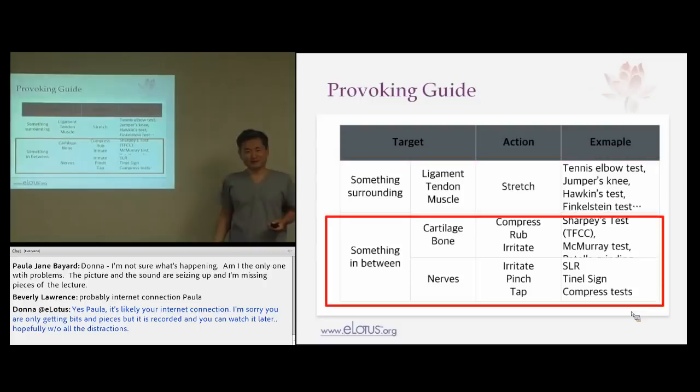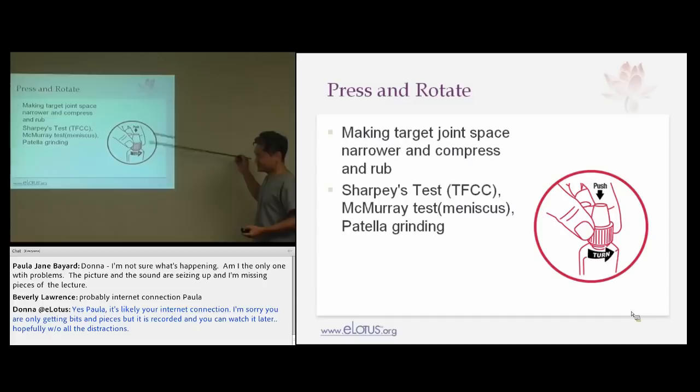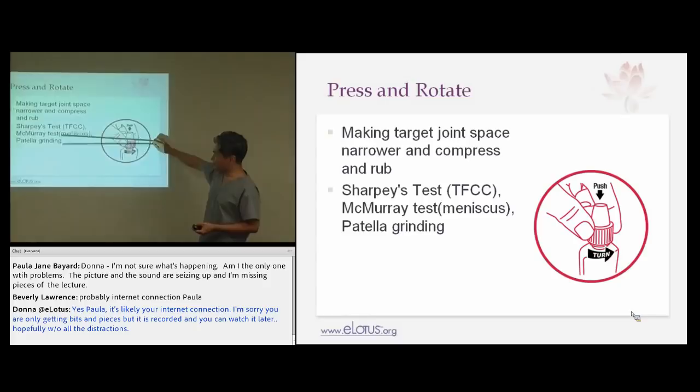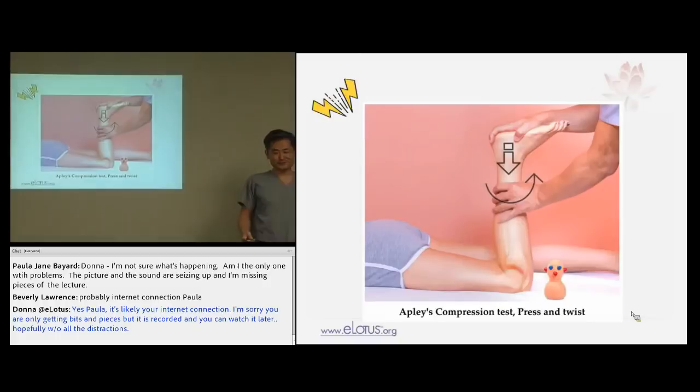Now pressing tests — for intra-articular structures like cartilage, bones, and discs. Think of a pill bottle: press and rotate. This same maneuver is used in Sharpey's test for TFCC, McMurray's test for meniscus, and patellar grinding test for patellar pathology. These intra-articular structures cannot be stretched, so the only way is pressing.